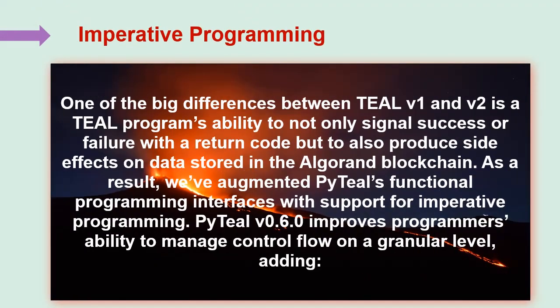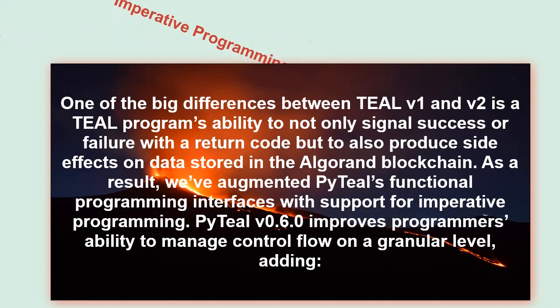One of the big differences between Teal v1 and v2 is a Teal program's ability to not only signal success or failure with a return code, but to also produce side effects on data stored in the Algorand blockchain. As a result, we have augmented PyTeal's functional programming interfaces with support for imperative programming. PyTeal v0.6.0 improves programmers' ability to manage control flow on a granular level, adding the following.